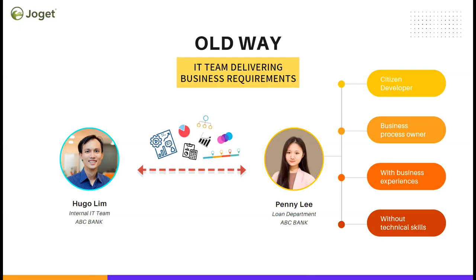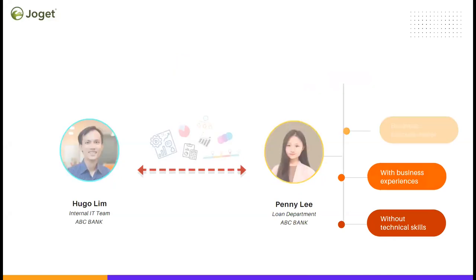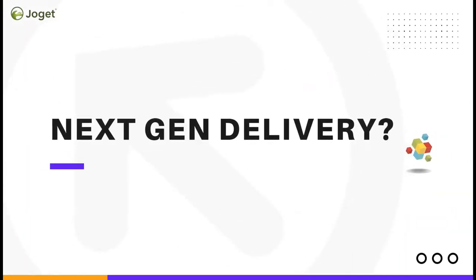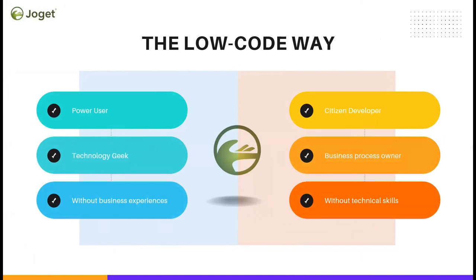Now that we have new ways of doing things, communication gaps occur between business users and the IT team, which is where we lose efficiency in delivering business needs. Hugo, you mentioned there's a next-generation low-code way of building enterprise applications. Can you elaborate on how this low-code way enables business users and IT users to collaborate on a platform using no-code, low-code, and pro-code?